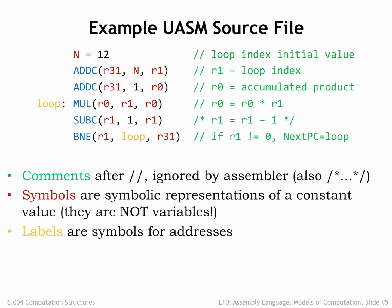Labels shown in yellow are symbols whose value is the address of a particular location in the program. The label 'loop' will be our name for the location of the MUL instruction in memory. In the BNE at the end of the code, we use the label 'loop' to specify the MUL instruction as the branch target, so if R1 is non-zero, we branch back to the MUL instruction and start another iteration. We'll use indentation for most UASM statements to make it easy to spot the labels; indentation isn't required, it's just another habit assembly language programmers use to keep their programs readable.